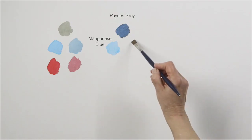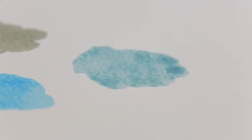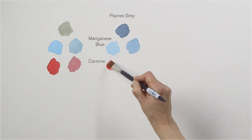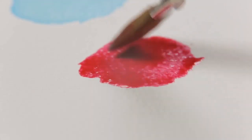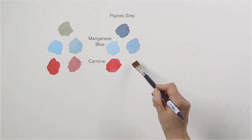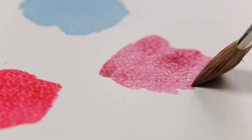Look what happens to the manganese blue hue when I add Payne's Grey to it. Now look at the way it alters the carmine.